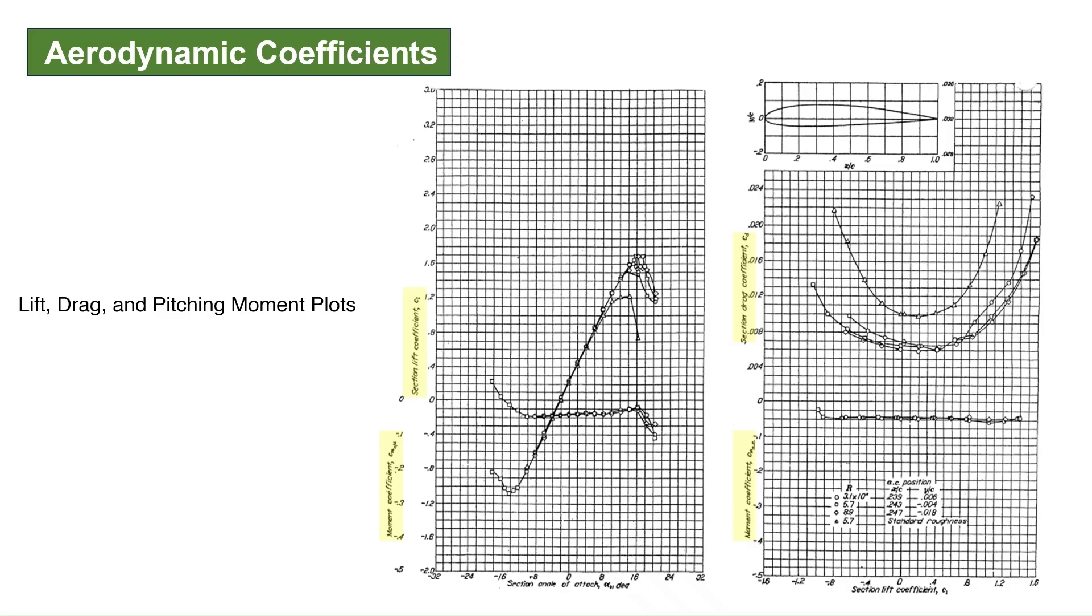In this plot, we can see the variation of CL, CD, and CM with respect to the angle of attack. This type of plot is very useful, particularly in determining the stall speed, trim characteristics, and required wing incidence of an airplane.